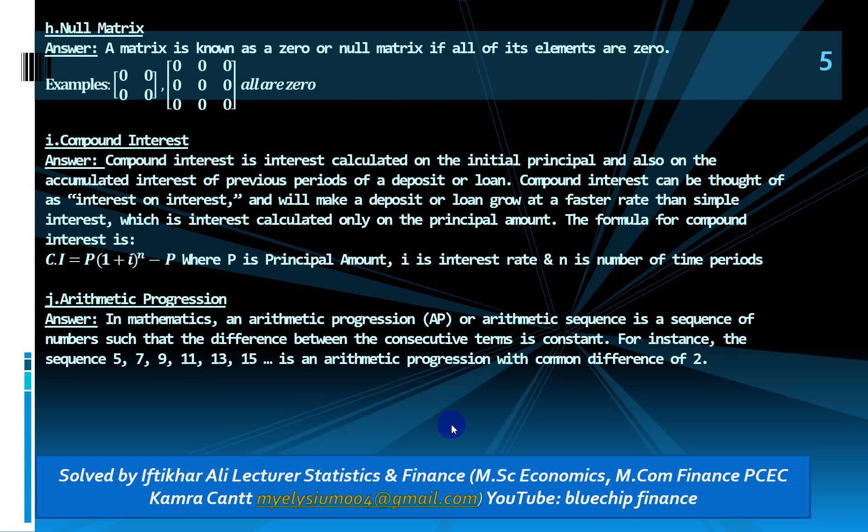Arithmetic progression: in mathematics, an arithmetic progression or arithmetic sequence is a sequence of numbers such that the difference between consecutive terms is constant. For instance, the sequence 5, 7, 9, 11, 13, 15 is an arithmetic progression with a common difference of 2.